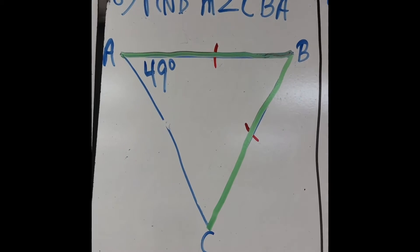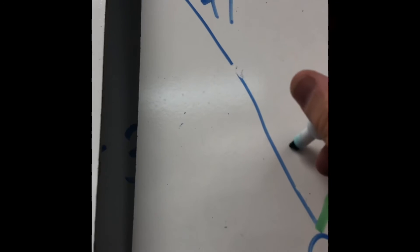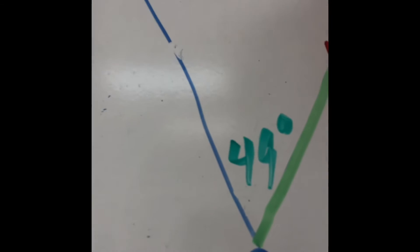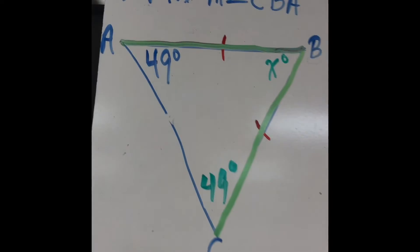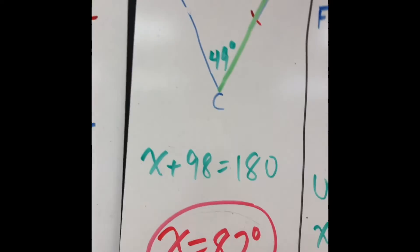Find CBA. Okay. If this is 49, then this is 49. I'm going to call this x. 49 plus 49 plus x equals 180. x equals 82.